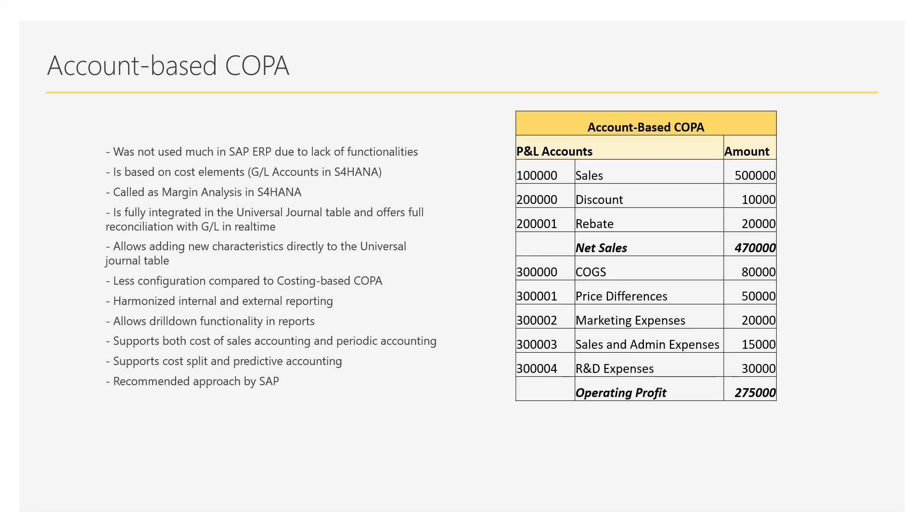Because the data is completely stored in the universal journal table, both external reporting — balance sheets and P&L items for legal authorities — and internal management reporting are now harmonized. Account-based COPA also allows drill-down functionality in reports, so you can double-click on items and dig deeper to the lowest level to see details in depth.